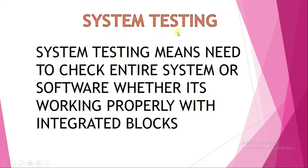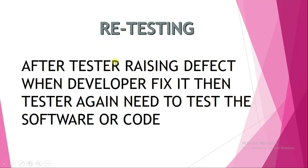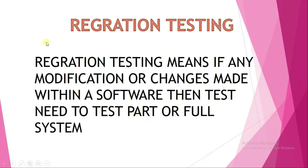Next is retesting. After a tester raises a defect and the developer fixes it, the tester needs to test again — either in individual blocks, individual units, or the whole system — to verify the fix. This is called retesting.